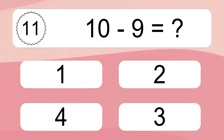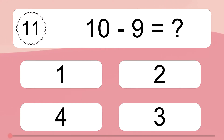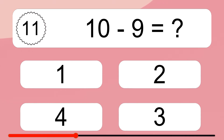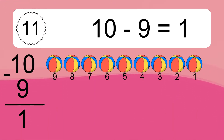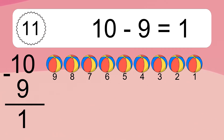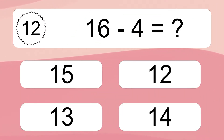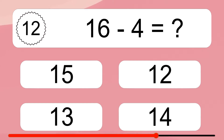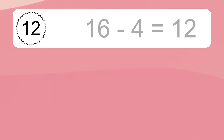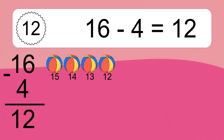10 minus 9 equals what? 10 minus 9 equals 1. Let's count it: 9, 8, 7, 6, 5, 4, 3, 2, 1. 16 minus 4 equals what? 16 minus 4 equals 12. Let's count it: 15, 14, 13, 12.